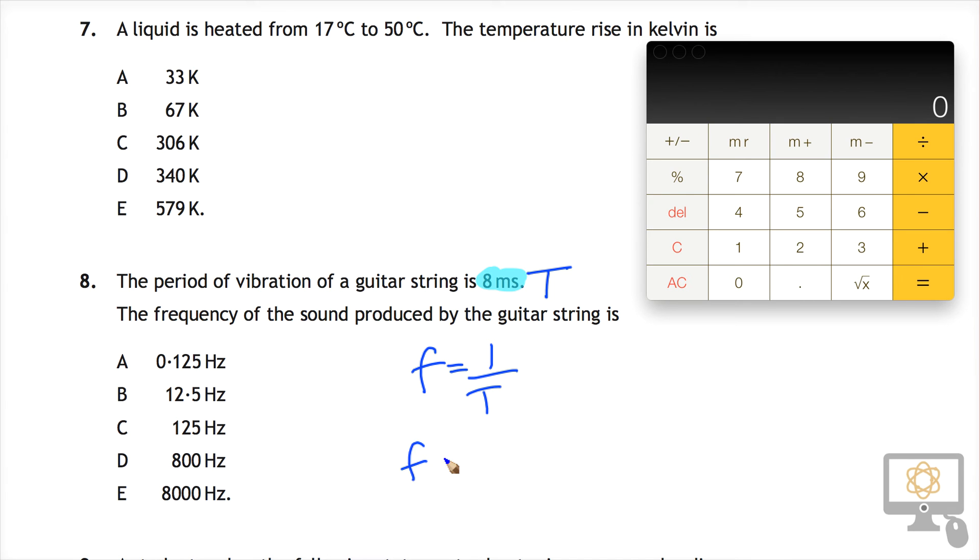And so therefore the frequency is equal to 1 over the period of 8 milliseconds, which is 8 times 10 to the minus 3. That's equivalent to 0.008. It's the same way of writing it.